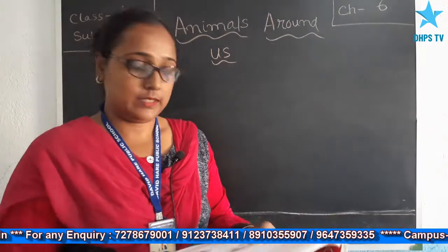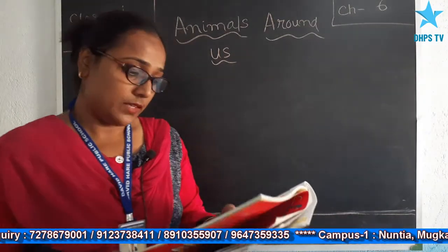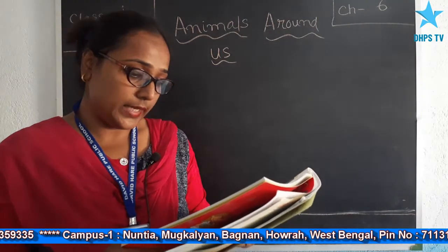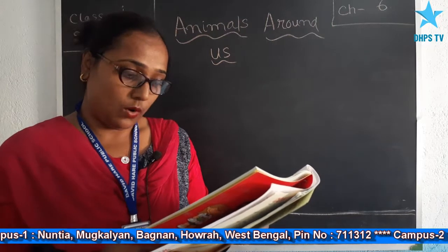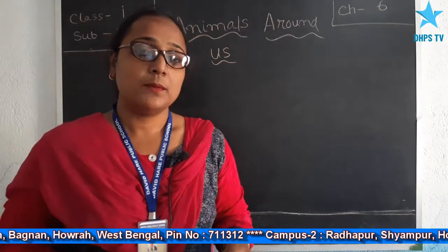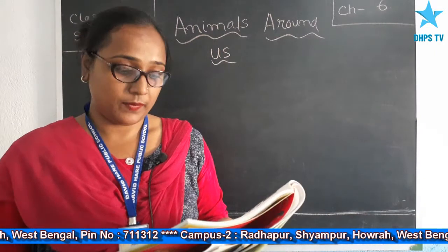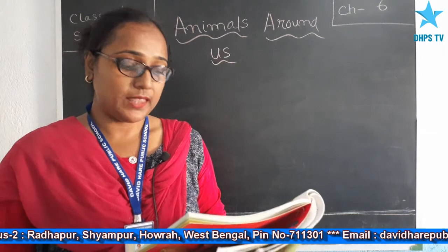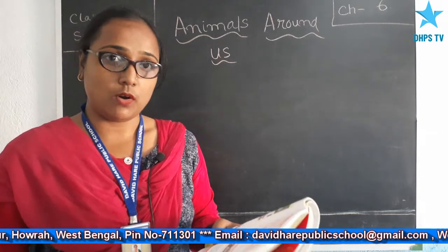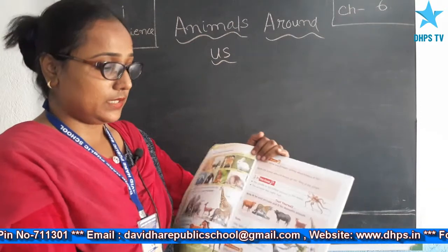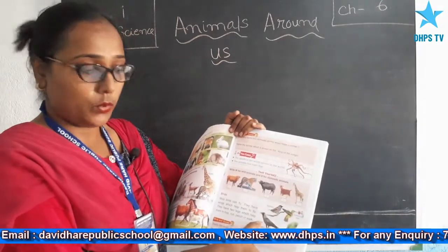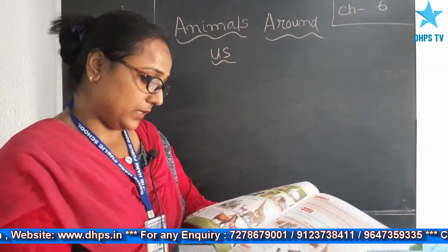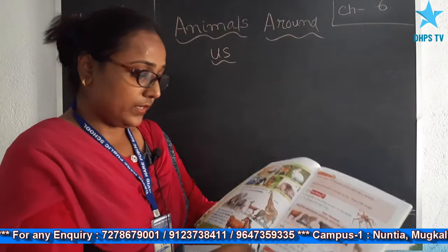Now comes the bird section. What is a bird? Most birds can fly; they have wings which help them to fly. They have two legs which help them to hop, run, perch, or walk. We can see birds flying in the sky. These are pictures of some birds: sparrow, crow, hummingbird, and parrot.